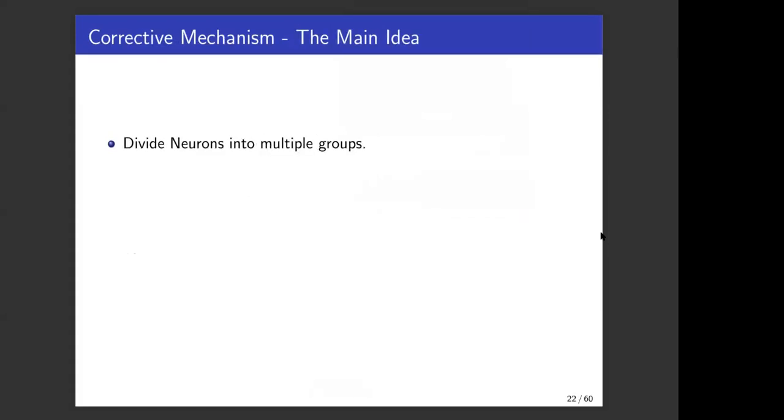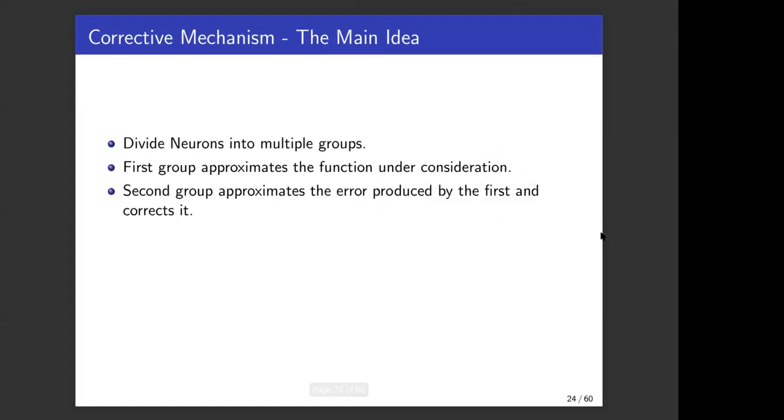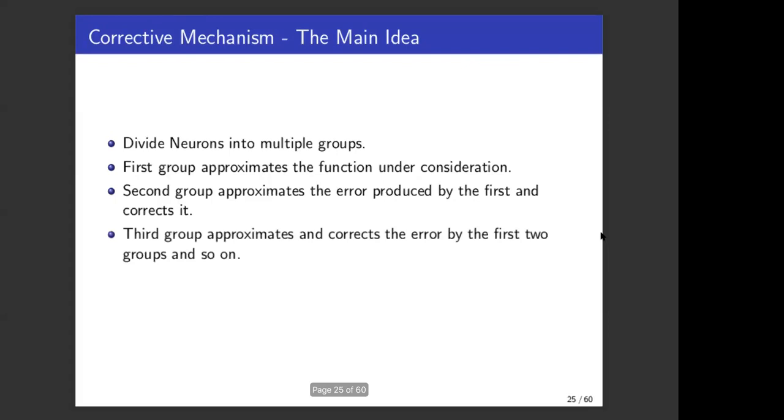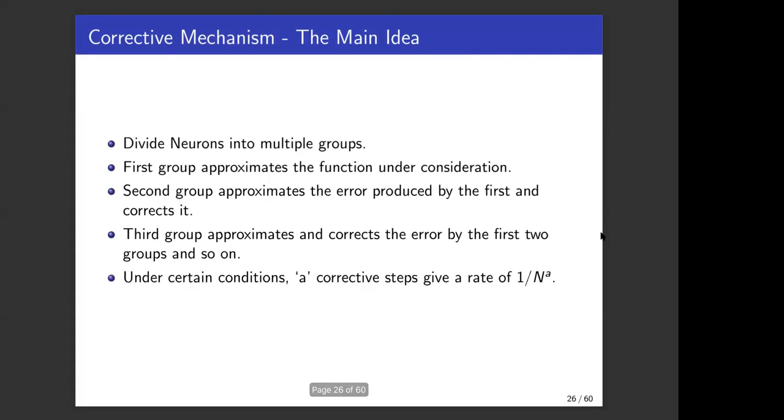Let me go into some technical content. The main idea behind all these results is that we use the corrective mechanism. We first divide all the available nonlinear units or neurons into multiple groups. The first group approximates the function under consideration. The second group approximates the error produced by the first group and corrects it. The third approximates and corrects the error produced by first two groups and so on. Under certain conditions, after a number of corrective steps, we get a rate of one over n to the a, as claimed. We can do a number of corrections for exactly the class of functions which have theta ad bounded derivatives.